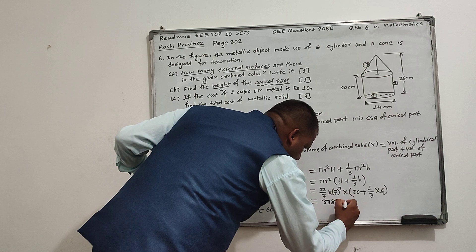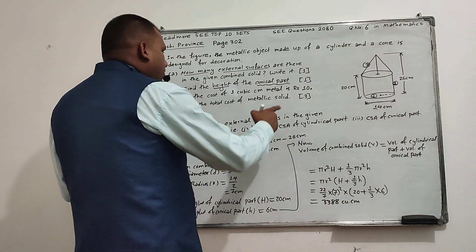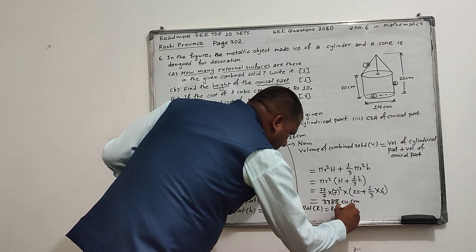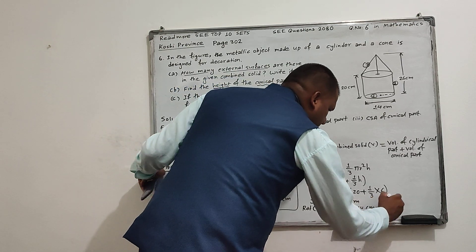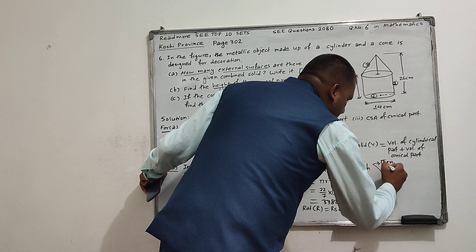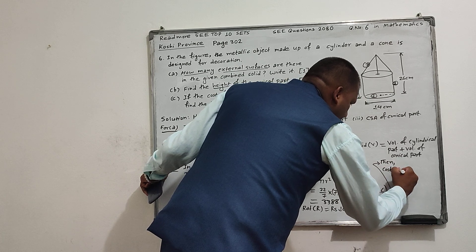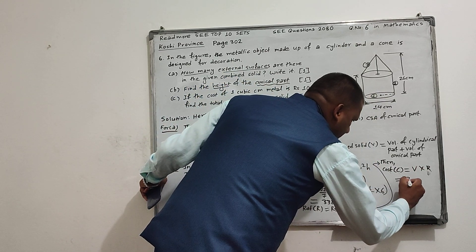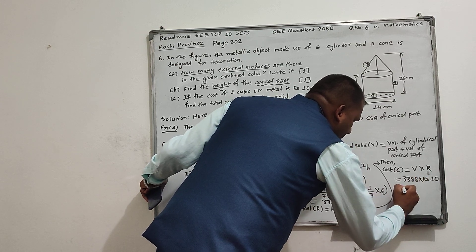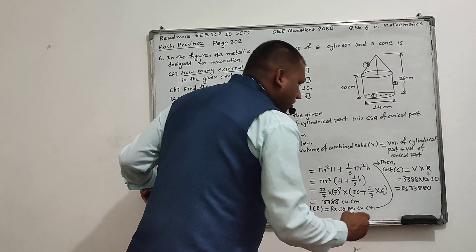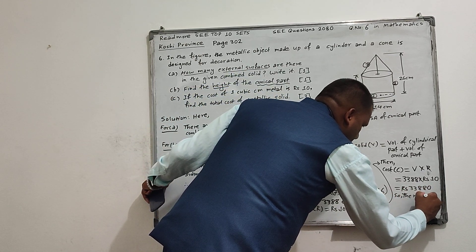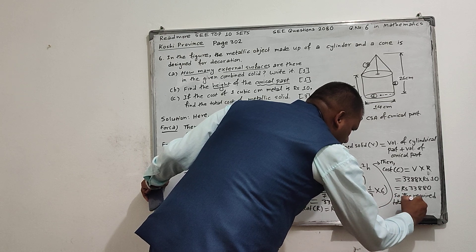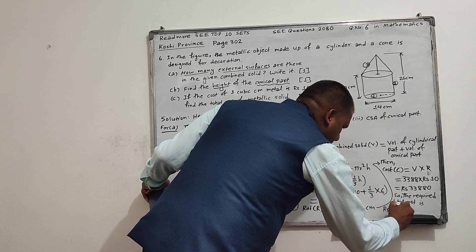The volume works out to 3,388 cubic centimetres. Let the rate equal rupees 10 per cubic centimetre. Then the total cost equals volume multiplied by rate, which gives us rupees 23,880. So the required total cost is rupees 23,880.